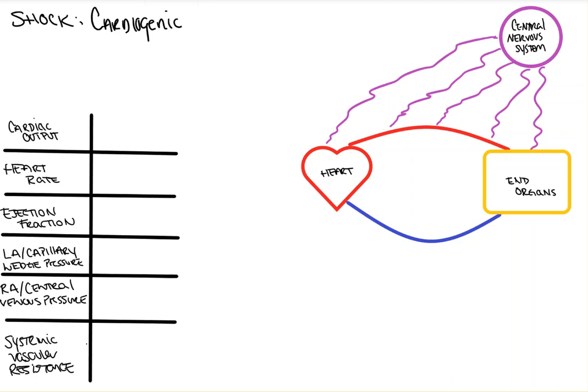I've drawn the diagram I'll use for all my shock videos. We have the heart, we have the arterial system which gets blood to the tissue, we have the venous system which returns blood to the heart, and then we have the nervous system which innervates these systems together. In this video, we're going to focus on the heart here, as this is where the primary problem is, hence the name cardiogenic shock.